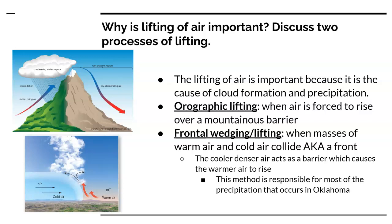The cold air then goes over the top of the mountain and continues down the other side. The second process is frontal wedging, or frontal lifting, which is when masses of warm air and cold air collide — also known as a front. The cooler, denser air acts as a barrier, and the warm air rises up into the atmosphere, essentially turning into storms. This method is responsible for most of the precipitation that occurs here in Oklahoma.